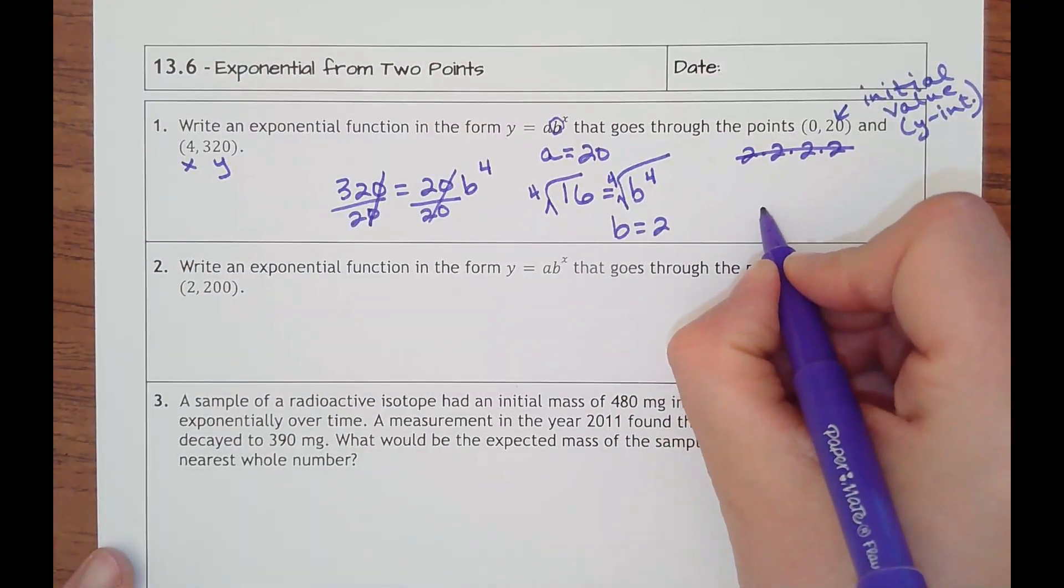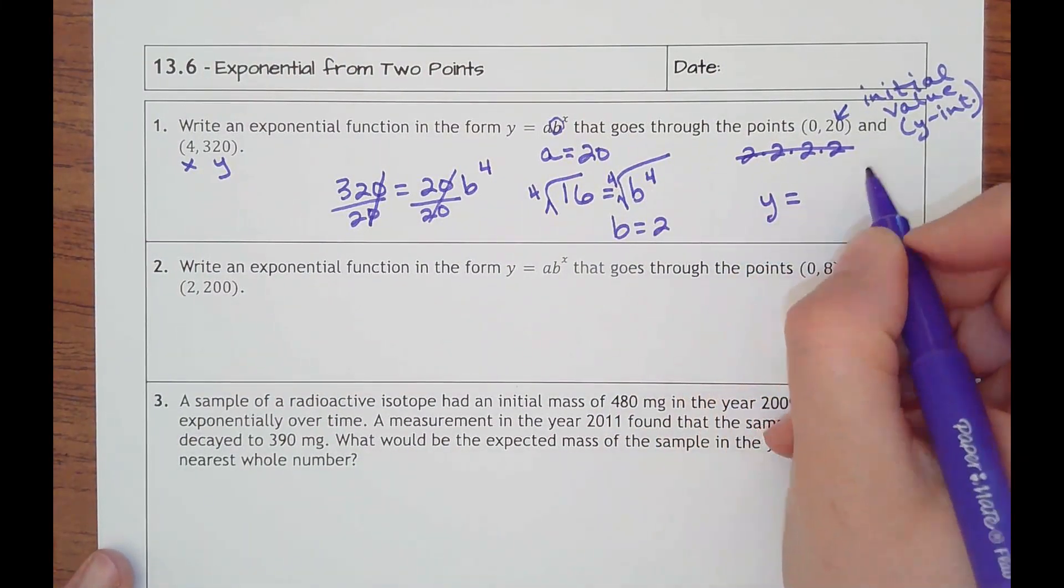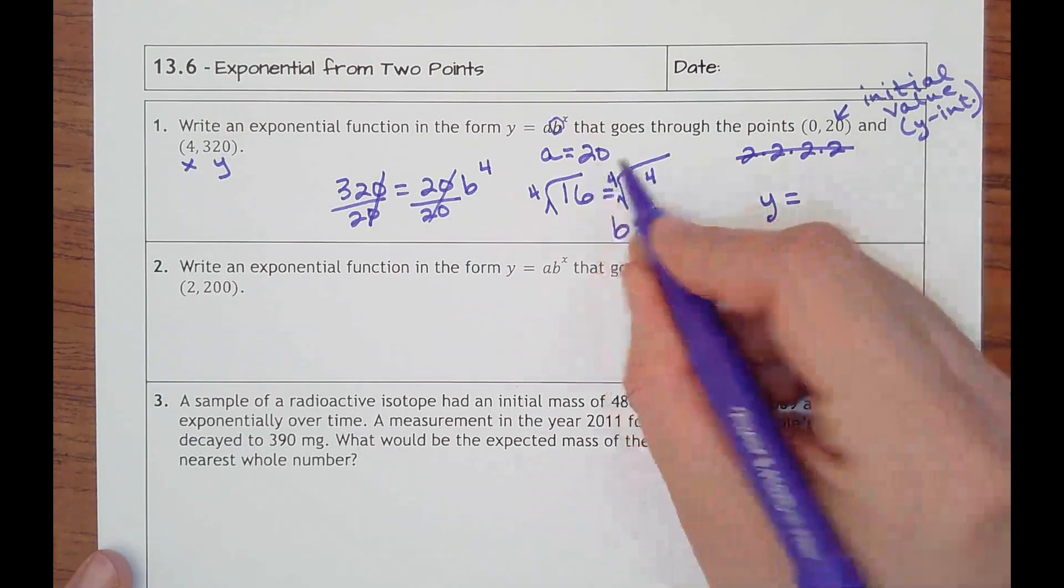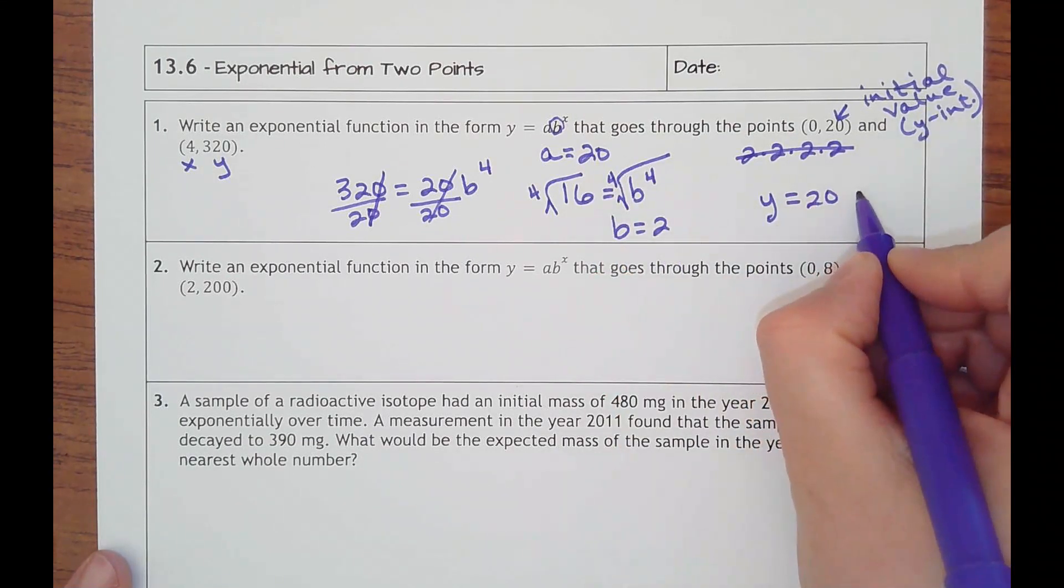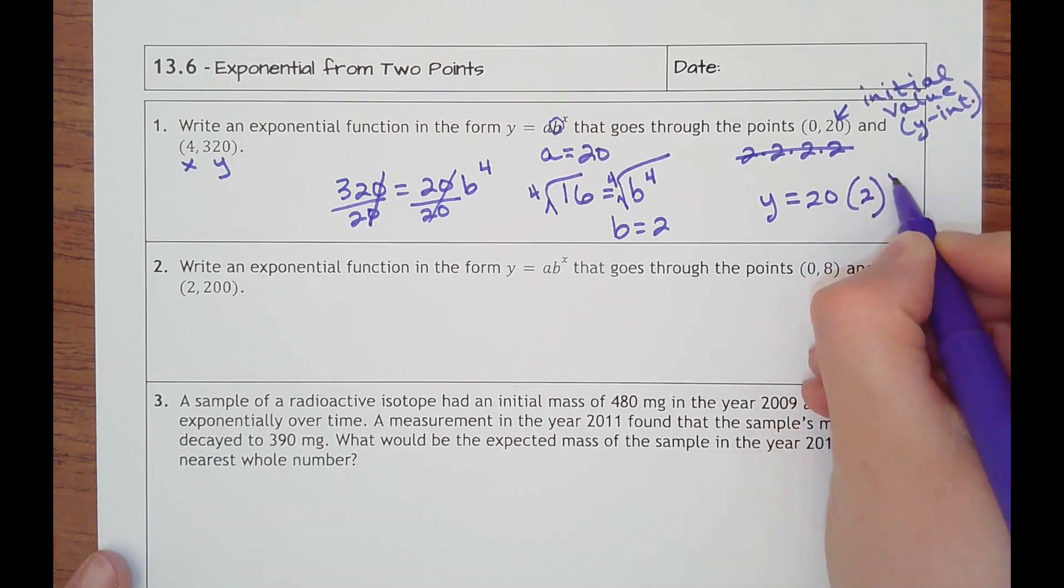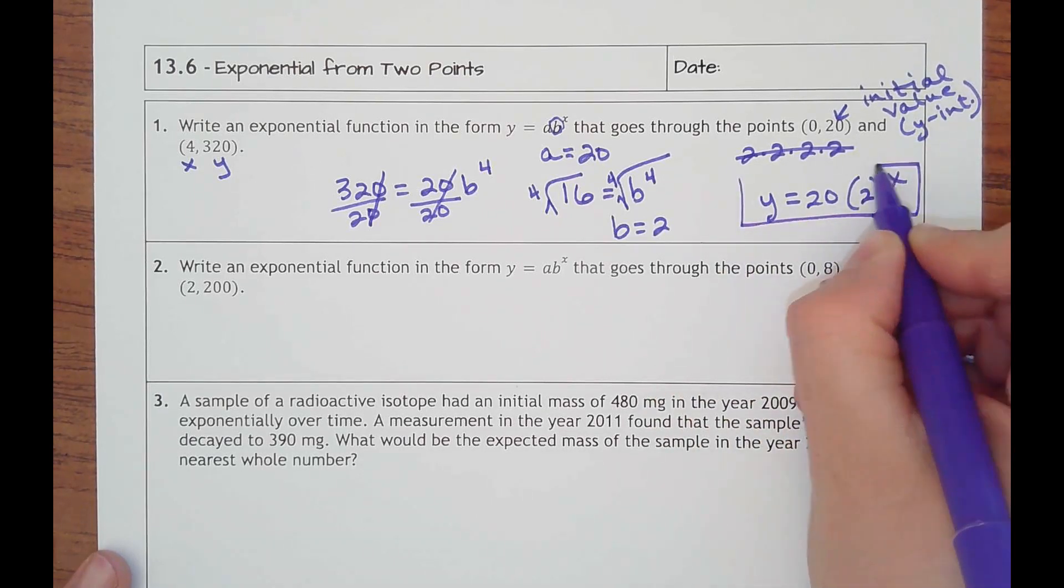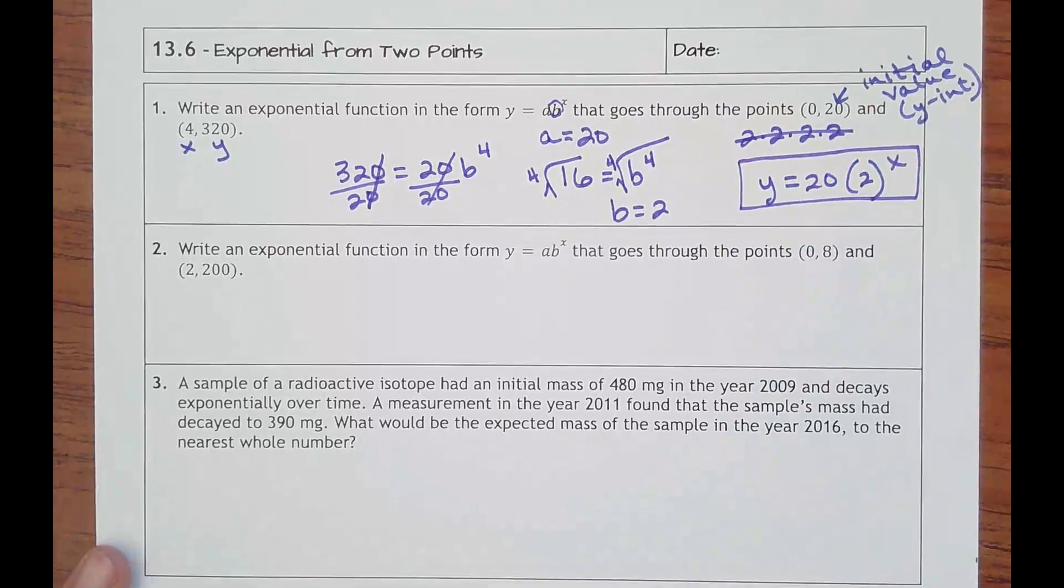So now I'm ready to write my equation. It's going to be y equals my a value, which was my initial value of 20. I found out my b was 2, so it's 20 times 2 to the x power. Alright, let's try another one.